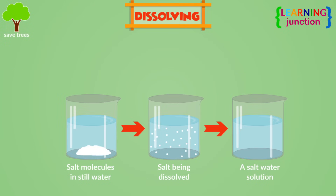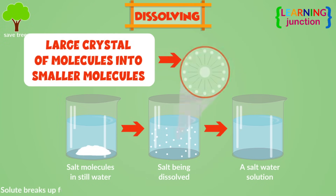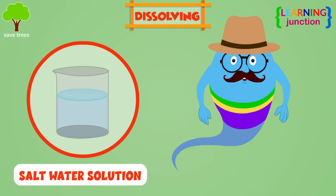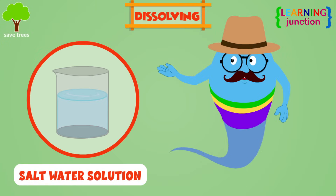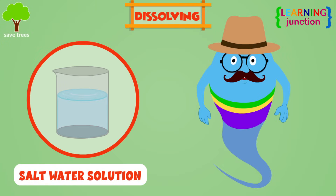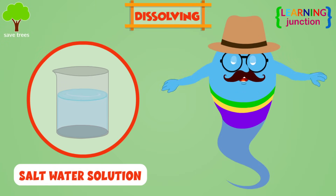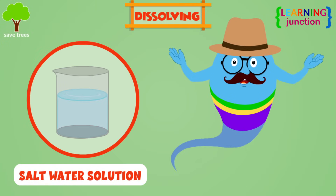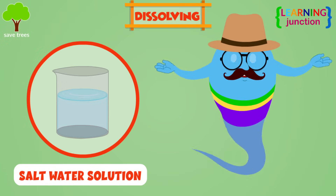Dissolving is when the solute breaks up from a larger crystal of molecules into much smaller groups, or individual molecules. In the salt water solution, the water molecules break salt molecules from the bigger crystal lattice.